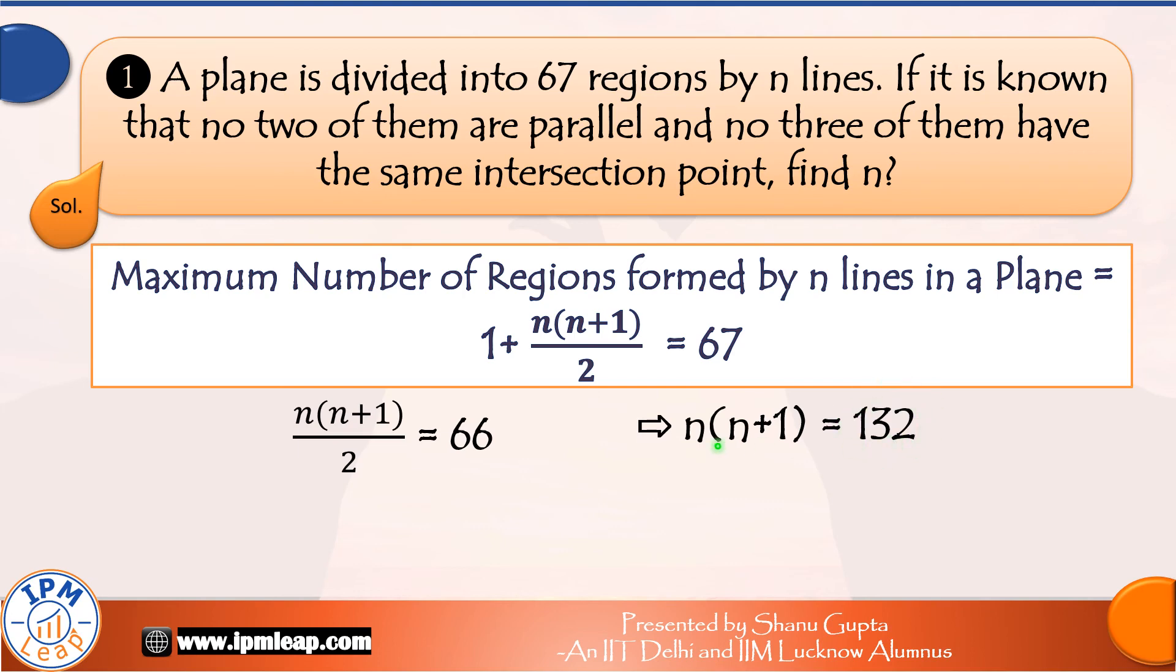Try writing the right-hand side as a product of two factors of 132, which are consecutive natural numbers. So, we know 132 can be written as 11 into 12. And therefore, comparing both sides of the equation, n is equal to 11. The number of lines on this plane are 11.